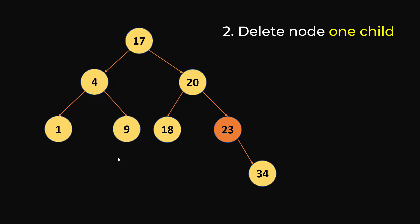The second case is deleting a node with only one child — let's say you are deleting 23. Here you can just remove it and move 34 up to the top. So your result will look something like this.